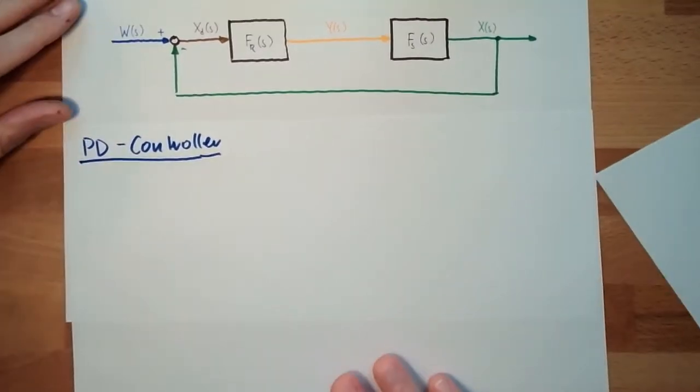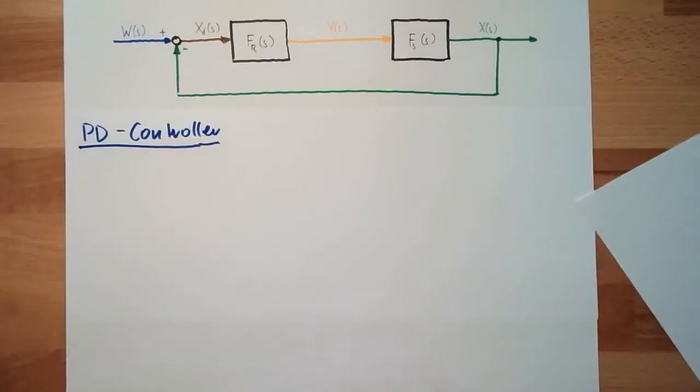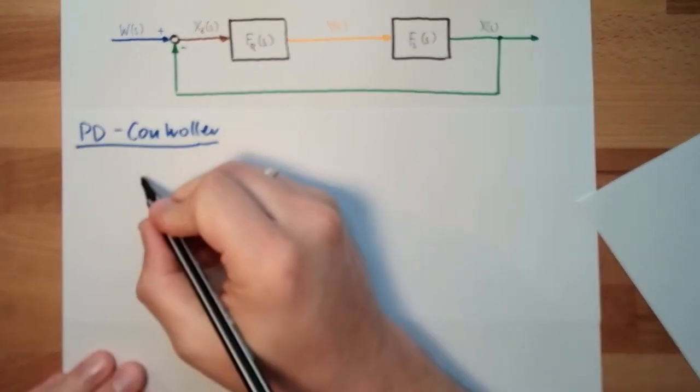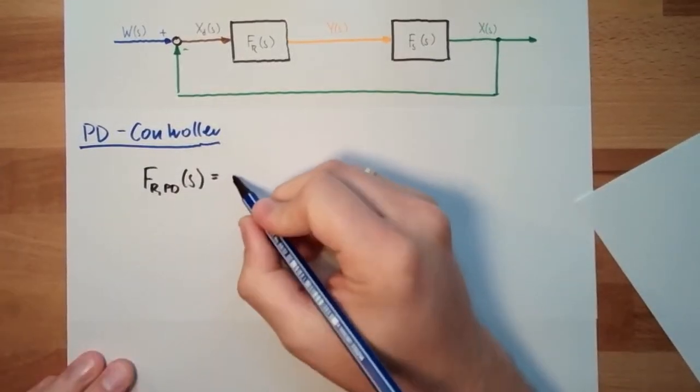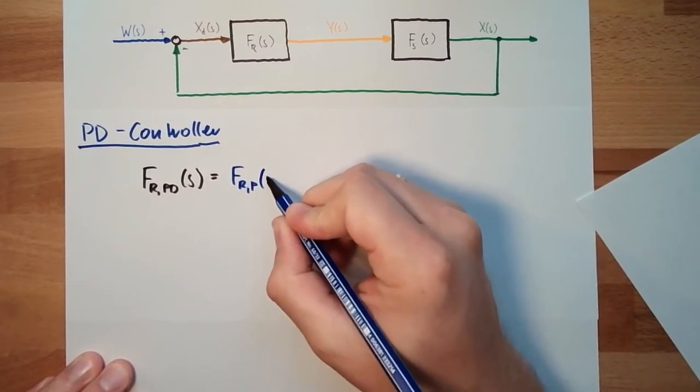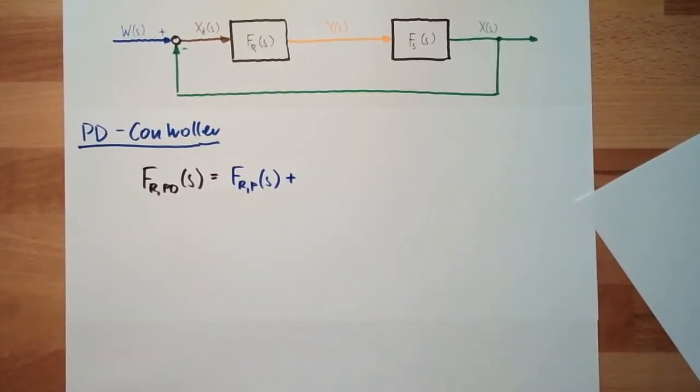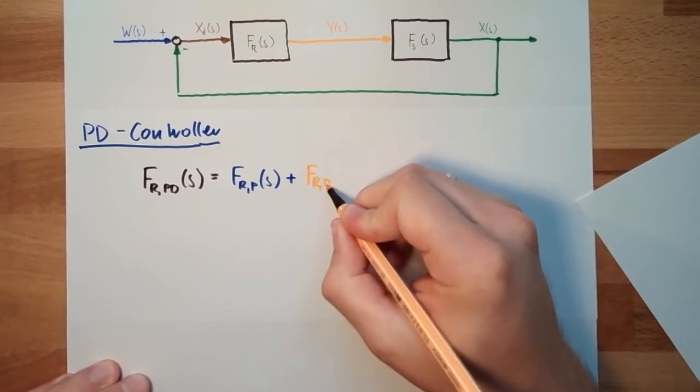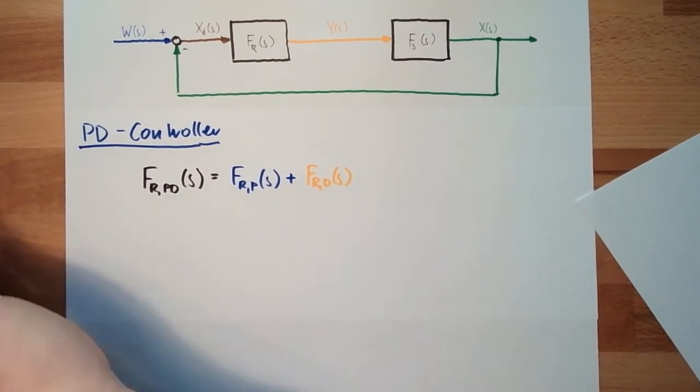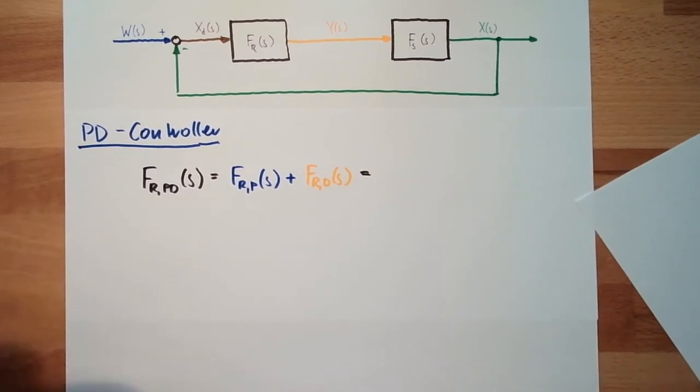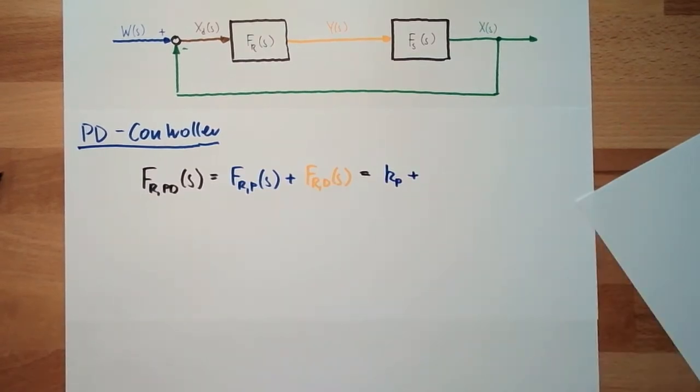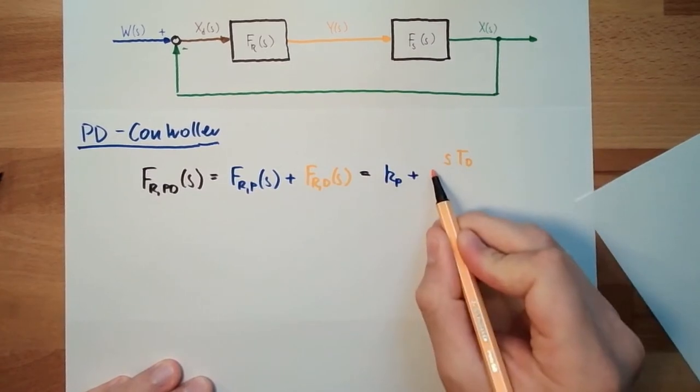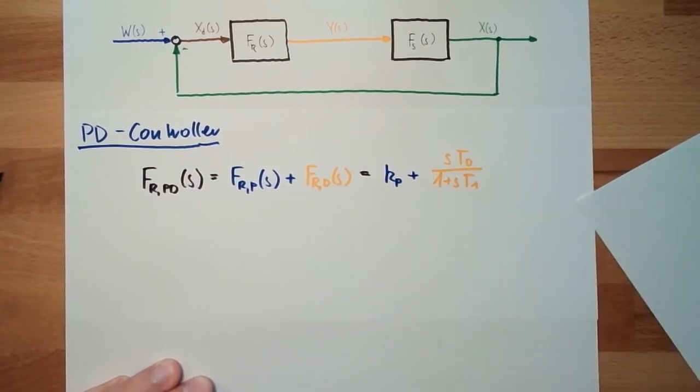And exactly like the PI controller, it's a parallel of a P element and a D element. So the transfer function of a PD controller is the transfer function of a P controller plus the transfer function of the D controller. And this actually equals the transfer function of a P controller, KP, plus the transfer function of the D controller, STD divided by 1 plus ST1, the T1 element.